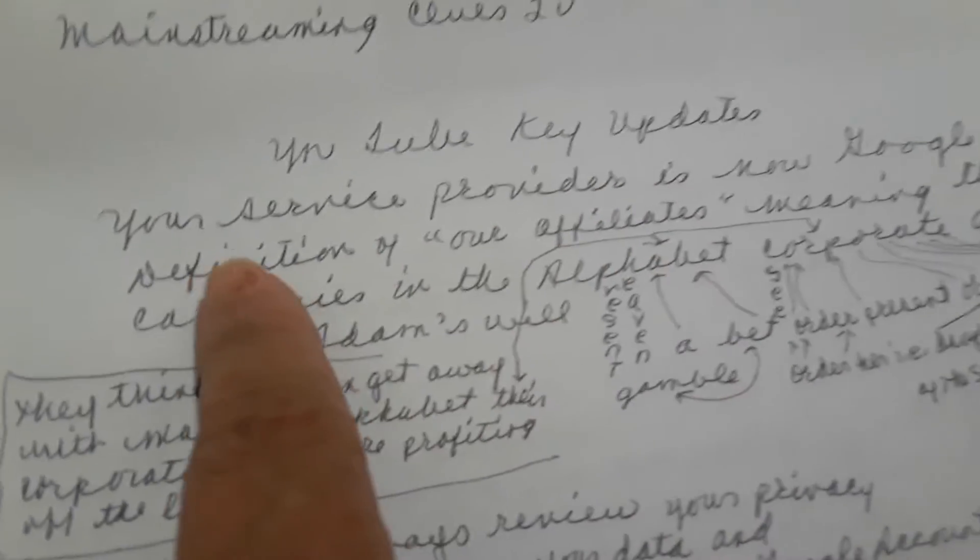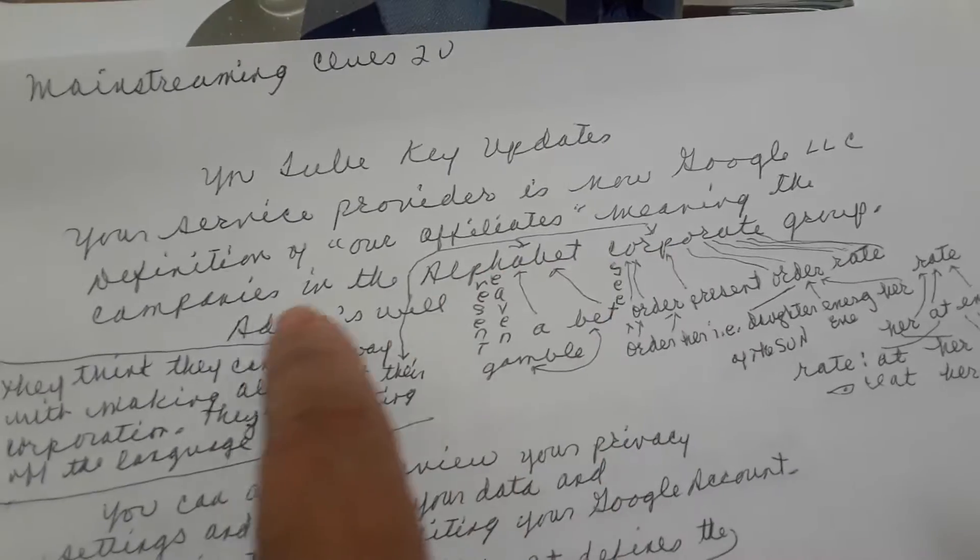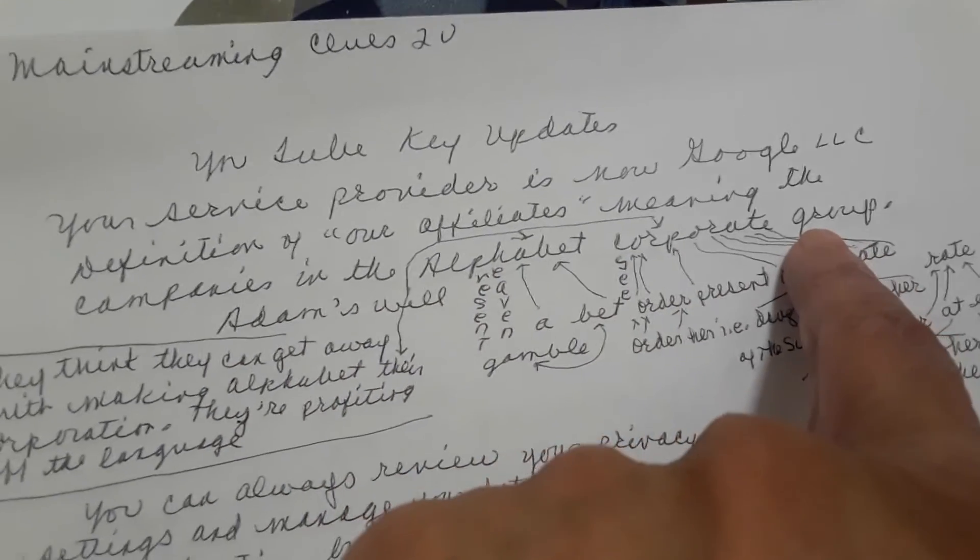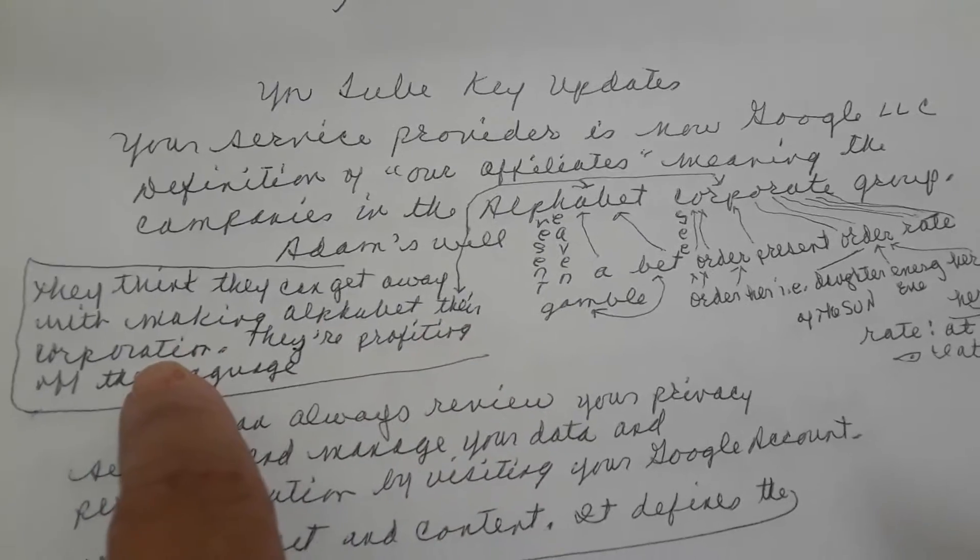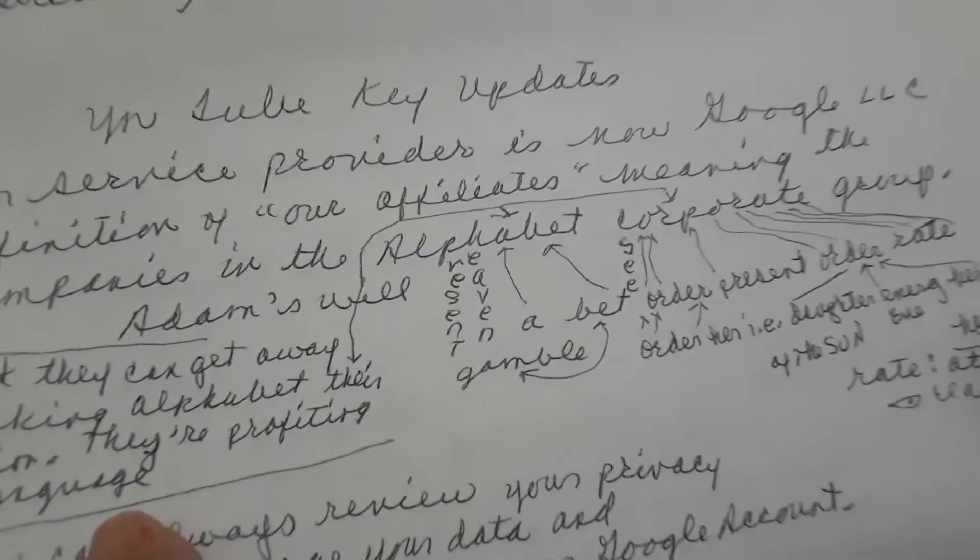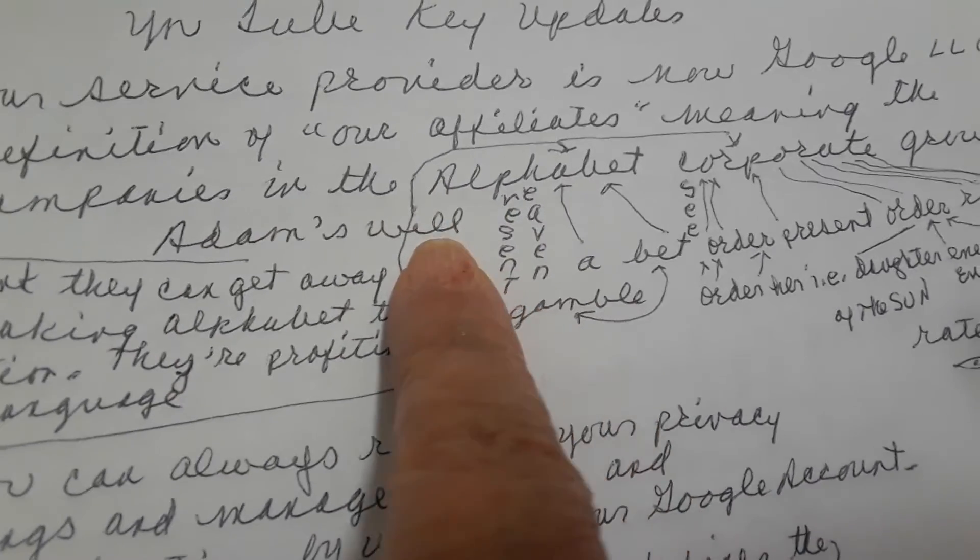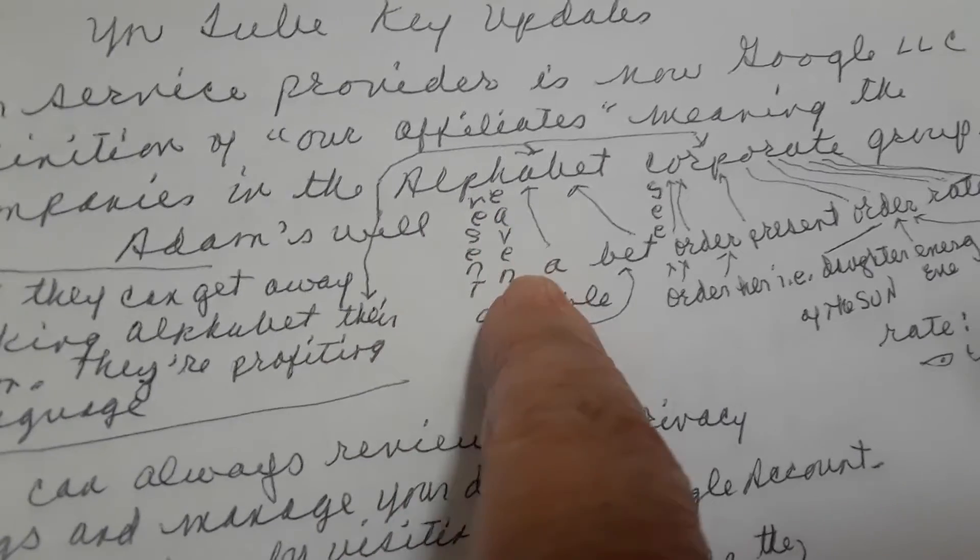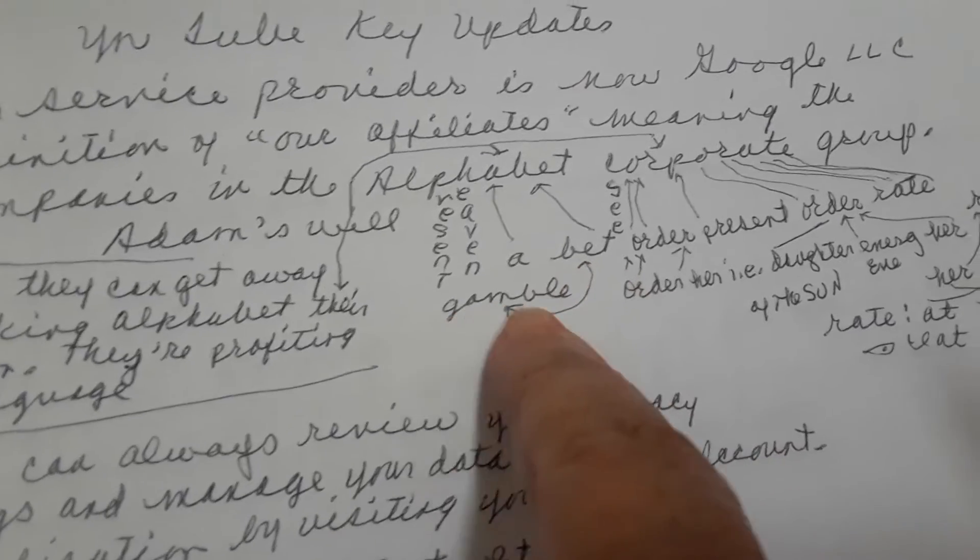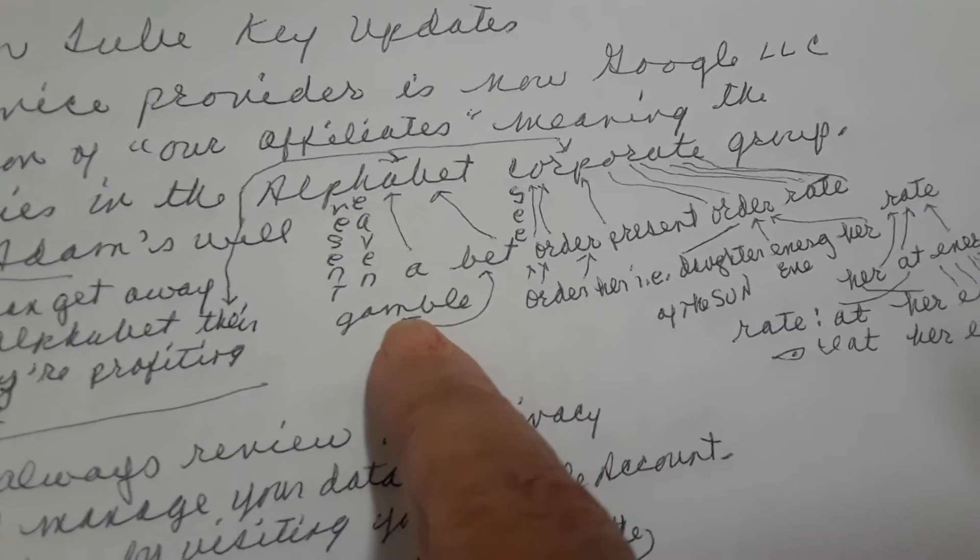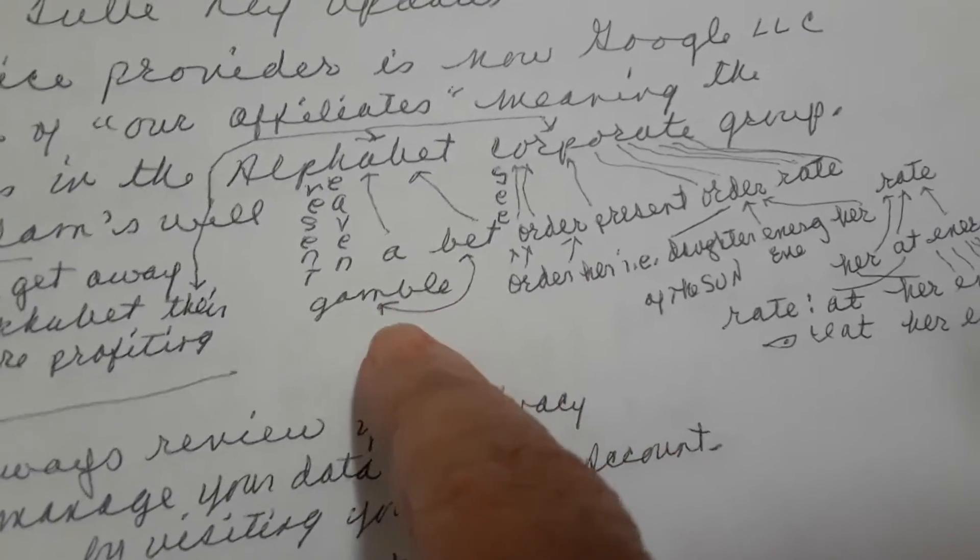YouTube key updates. Your service provider is now Google LLC, definition of our affiliates, meaning the companies in the Alphabet Corporate group. Alphabet Corporate. They think they can get away with making Alphabet their corporation. They're profiting off the language. Alphabet decoded. A for Adam's will, L for will, P for present, H for heaven, A for A, and B-E-T, bet. Adam's will presents heaven is a bet. It's a gamble. Game. Michelle, Michael Bouglay. Wills Eve's energy.